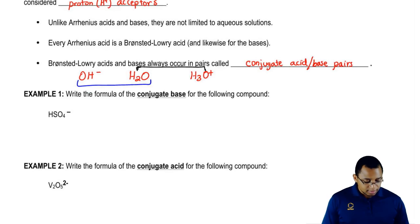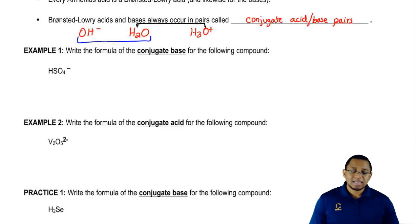Let's take a look at example 1. It says, write the formula of the conjugate base for the following compound. Now the following compound is HSO4 negative.